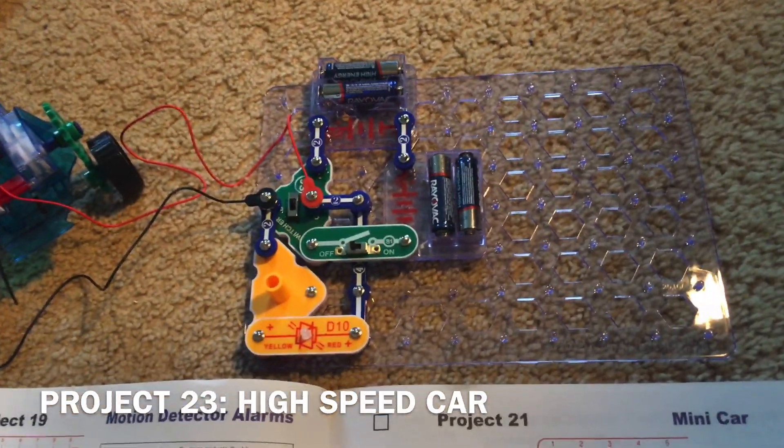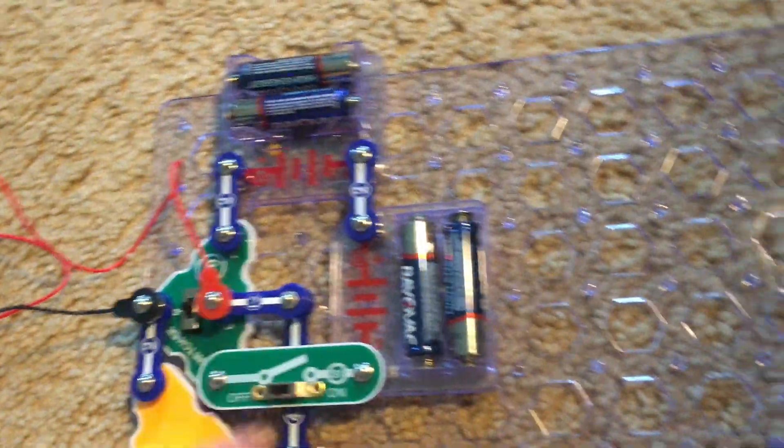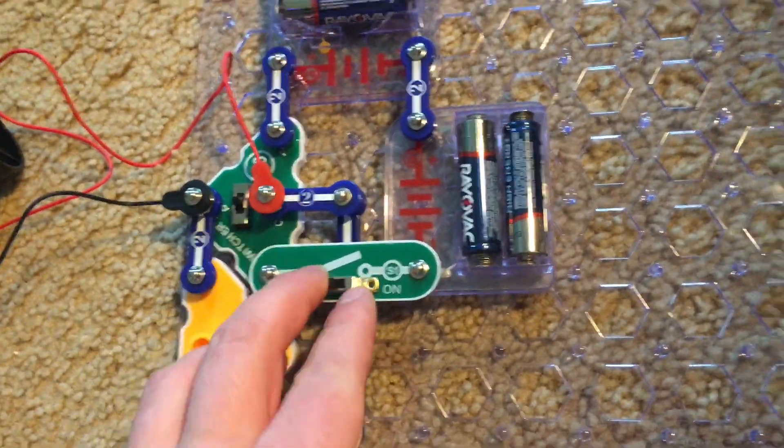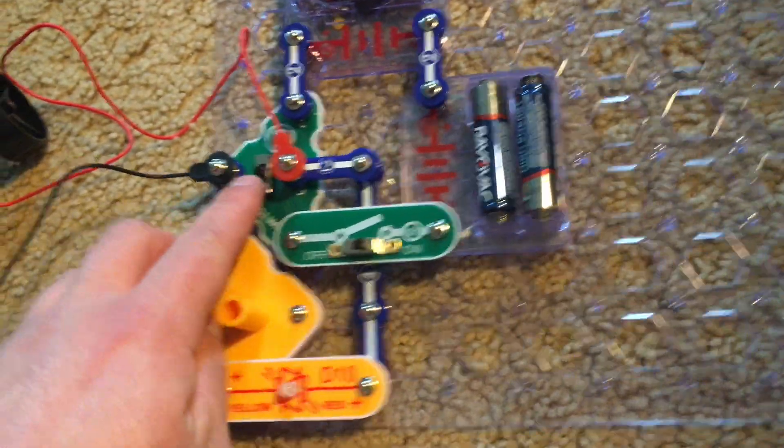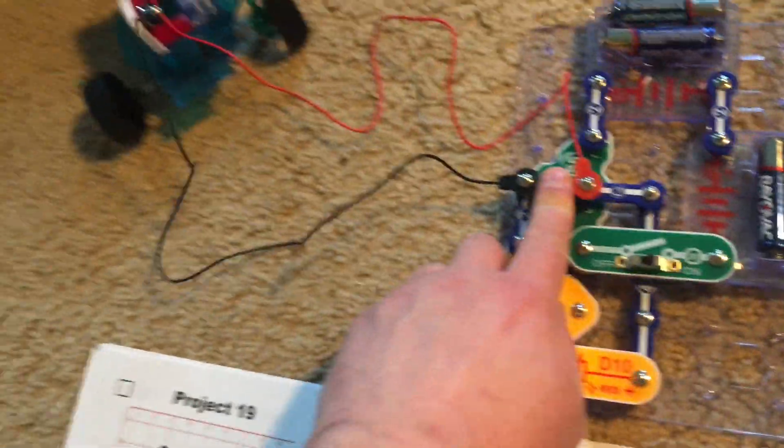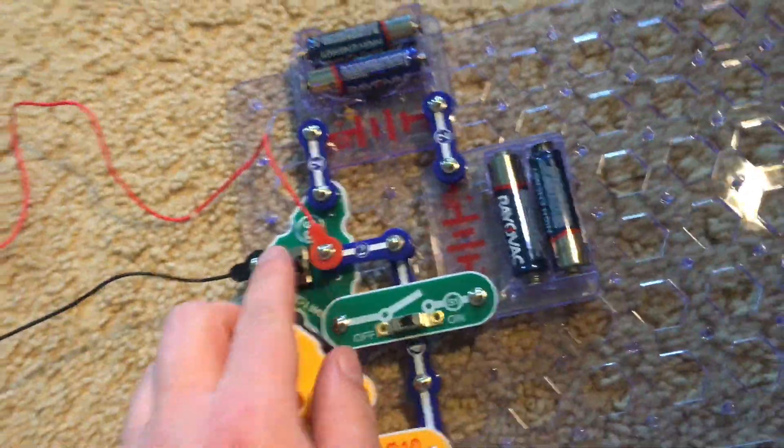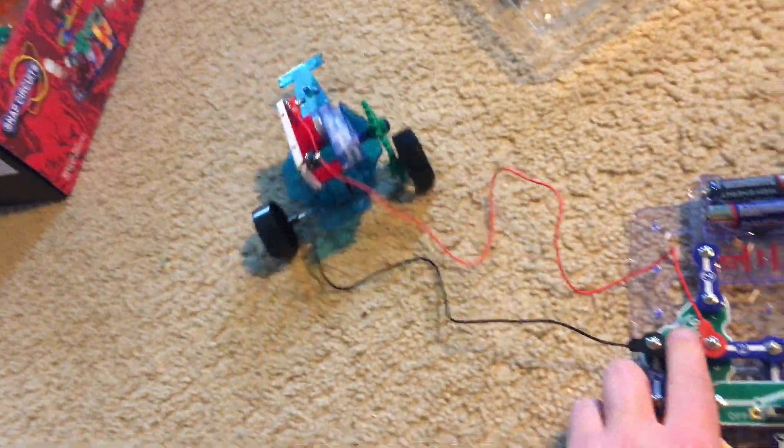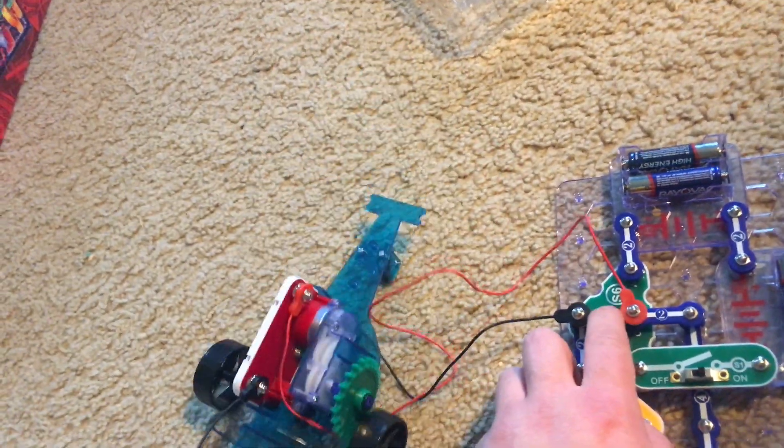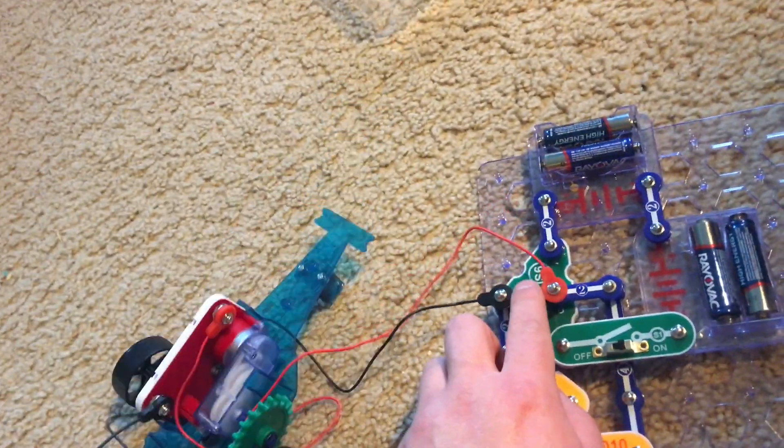I added a second battery holder to the circuit and now when I let the car go forward or backwards, it is much faster now. It is more difficult to control, however, because it is moving faster.